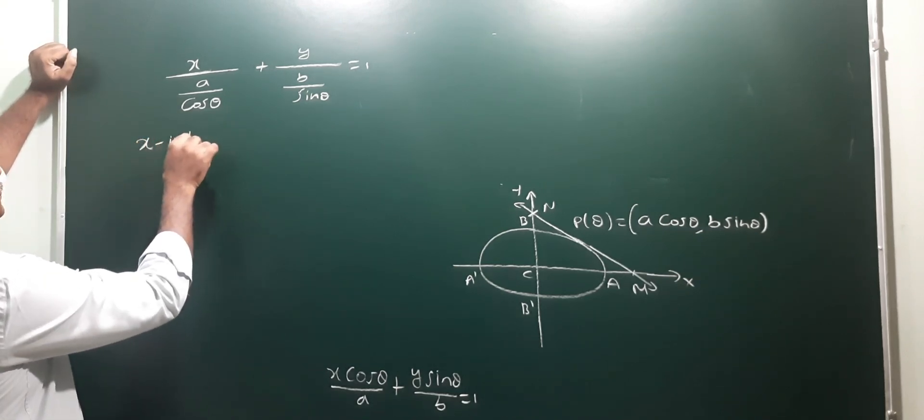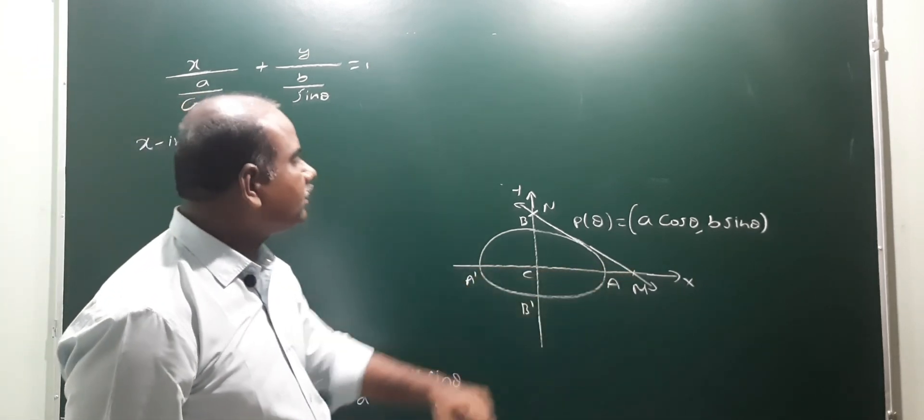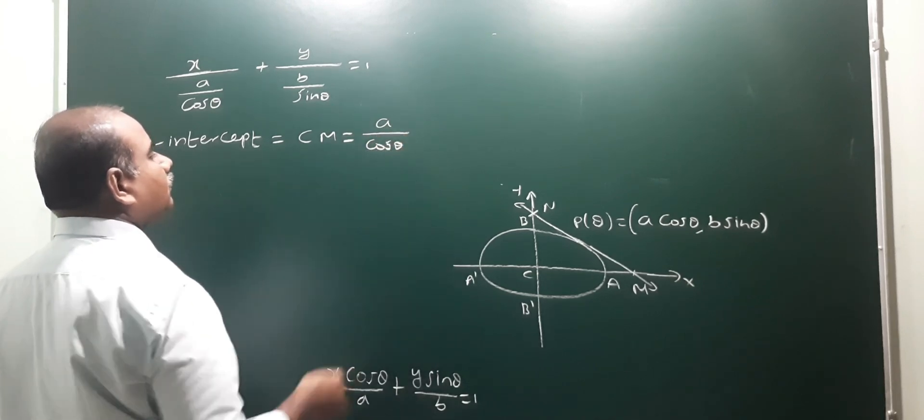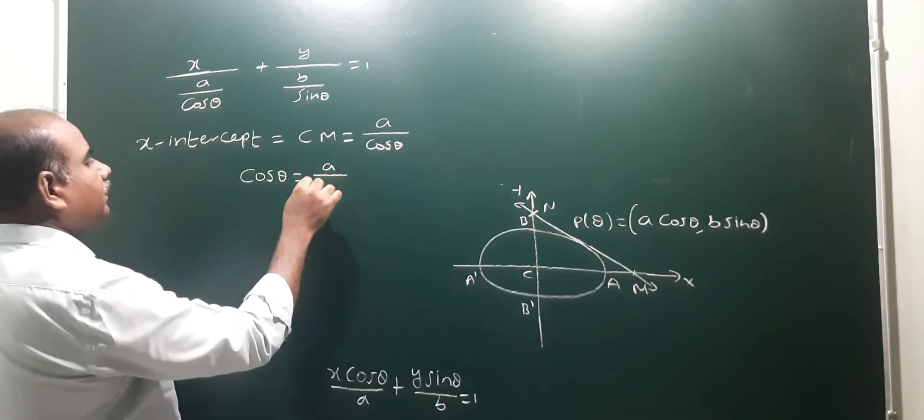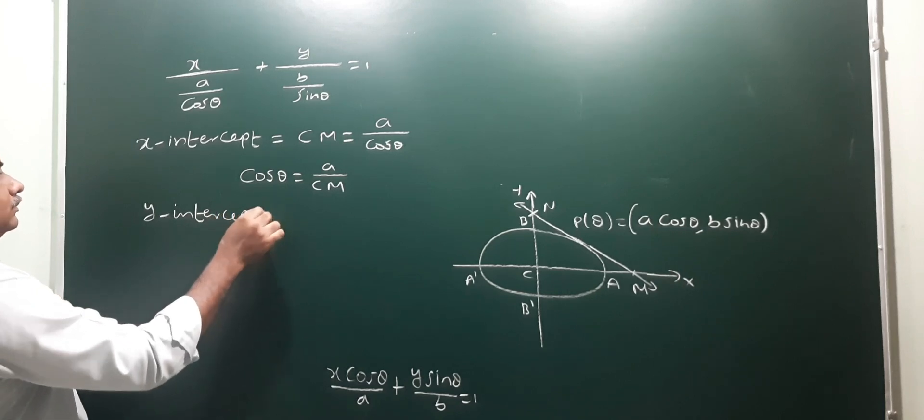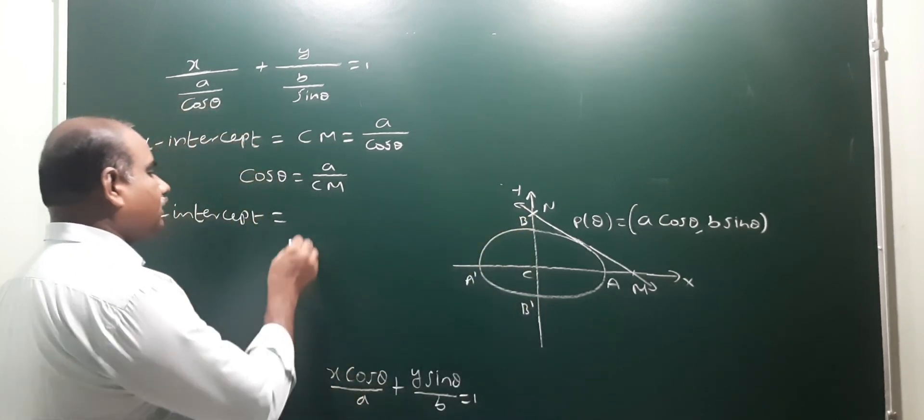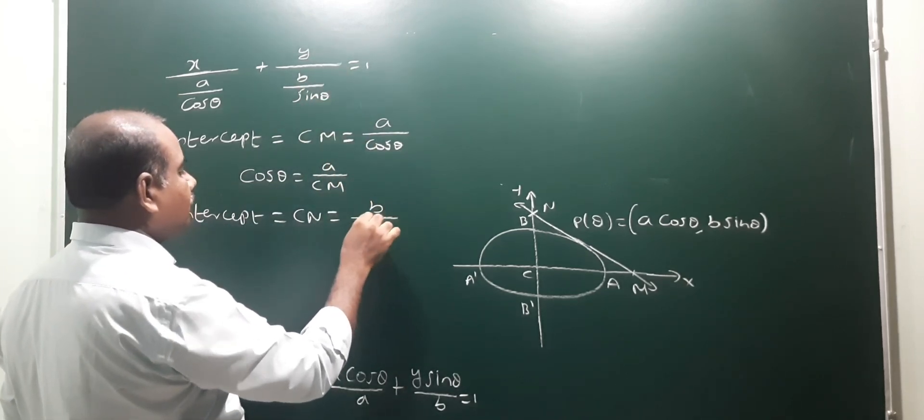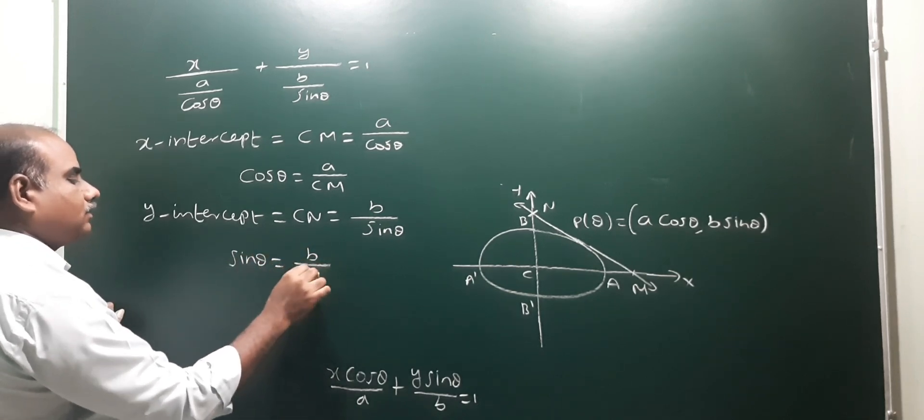Therefore, X intercept: CM is X intercept, CM is equal to a by cos theta. So cos theta value, cos theta is equal to a by CM. Y intercept is equal to CN, CN is equal to b by sin theta. So sin theta value: sin theta is equal to b by CN.